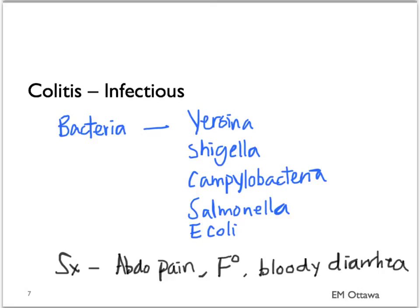As you can imagine, in terms of symptoms, patients with infectious colitis will present with abdominal pain, fever, and repeated episodes of bloody diarrhea or hematochezia.